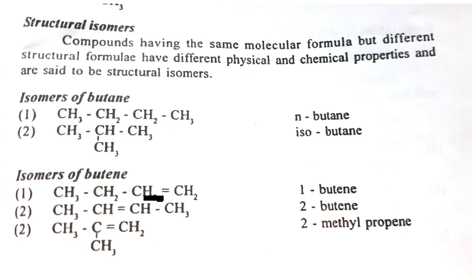For C4H10, we can draw the straight-chain structure and also a branched structure. For butene (C4H8), we also have isomers. Butene is C4H8.